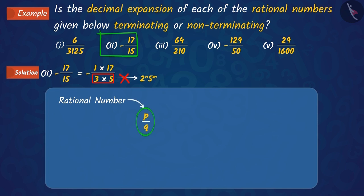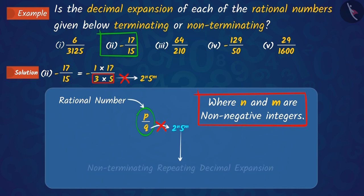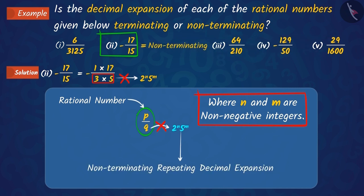You will remember that in a rational number p upon q, if q is not in the form of 2 raised to n into 5 raised to m, then the decimal expansion of the number is non-terminating.